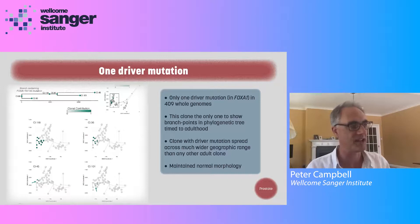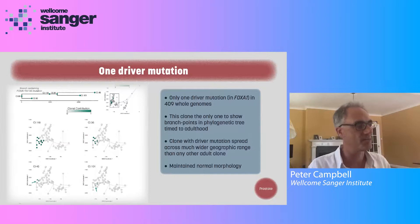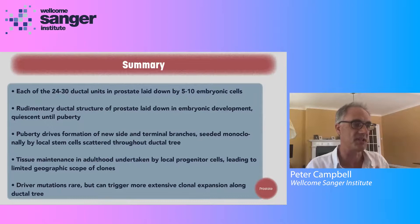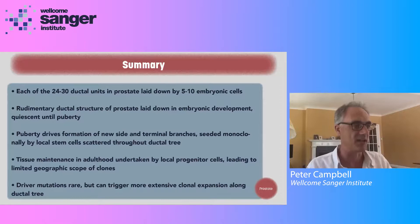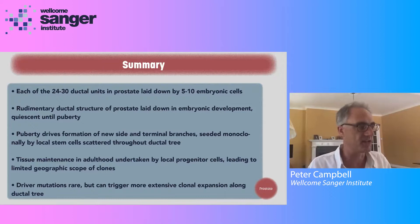Interestingly, although that clone had a driver mutation, the morphology of those ducts was relatively normal — certainly no sign of actual prostate cancer or even intra-epithelial neoplasia. To summarize the prostate data: each of the 24 to 30 ductal units in the prostate are laid down by five to ten embryonic cells. That rudimentary ductal structure is then quiescent until puberty, when a kick of androgens drives formation of new side and terminal branches monoclonally by local stem cells already scattered throughout the ductal tree. In adulthood, tissue maintenance is undertaken by local progenitor cells leading to limited geographic scope of clones, and driver mutations are rare but when they do occur can trigger more extensive clone expansion that respects the ductal tree.